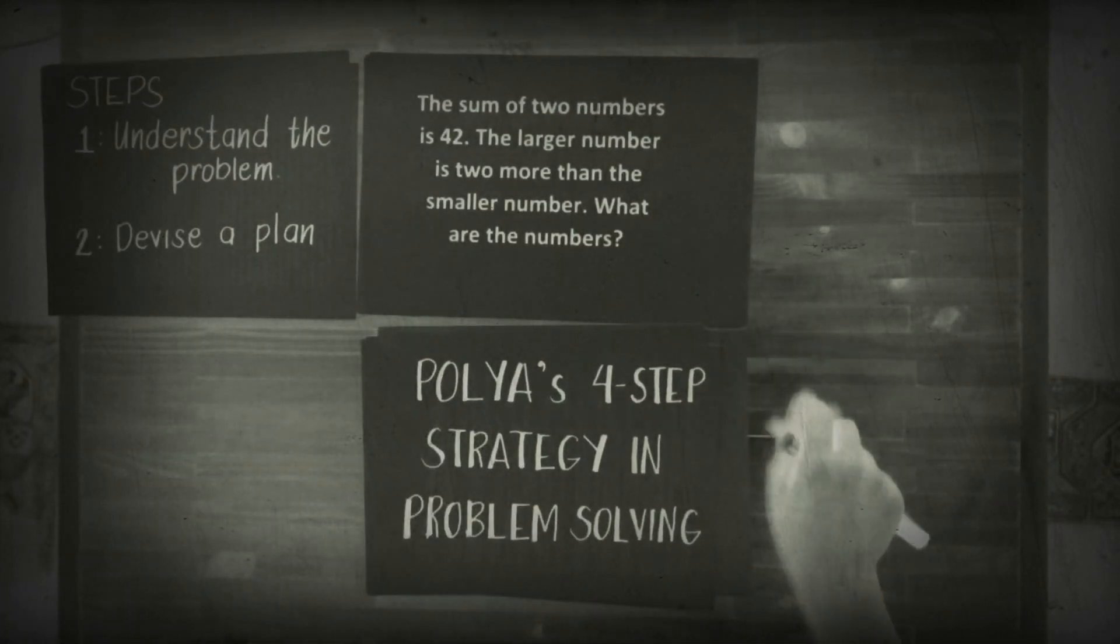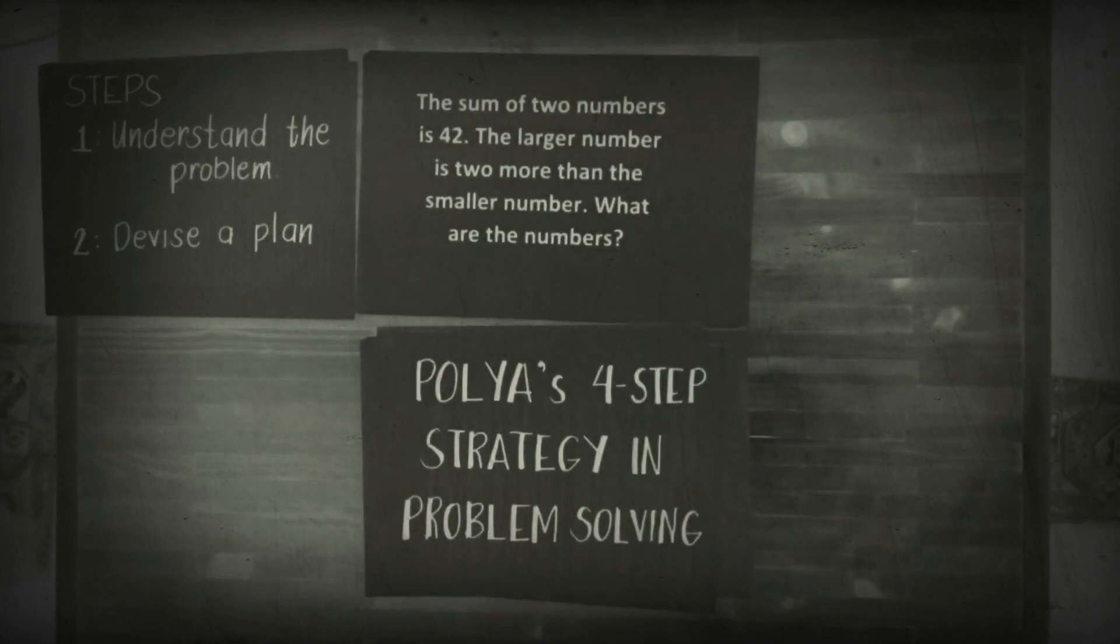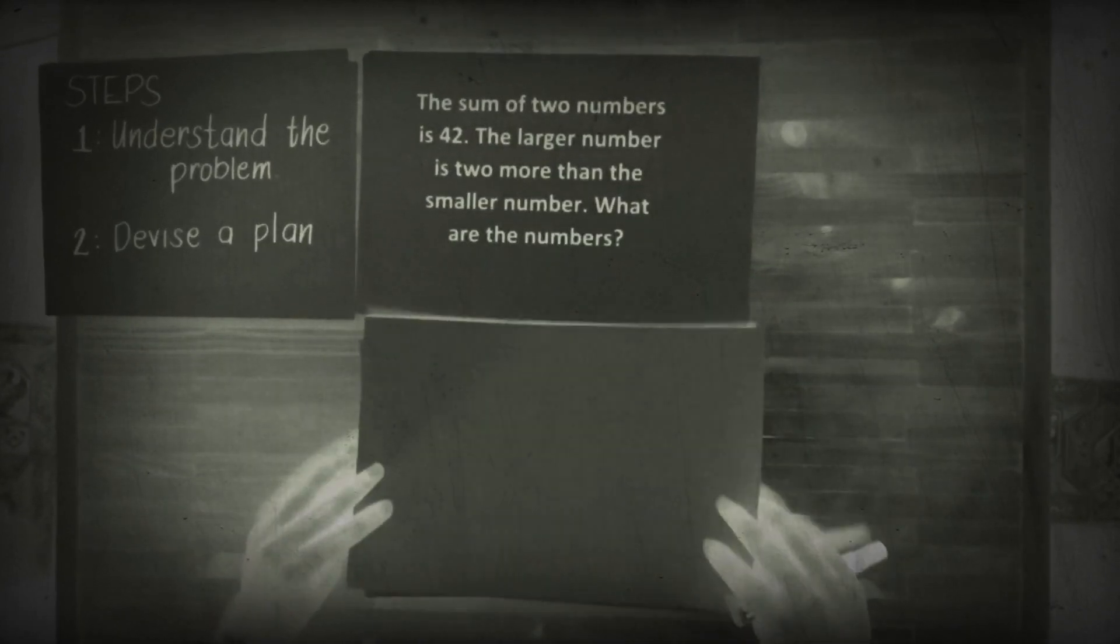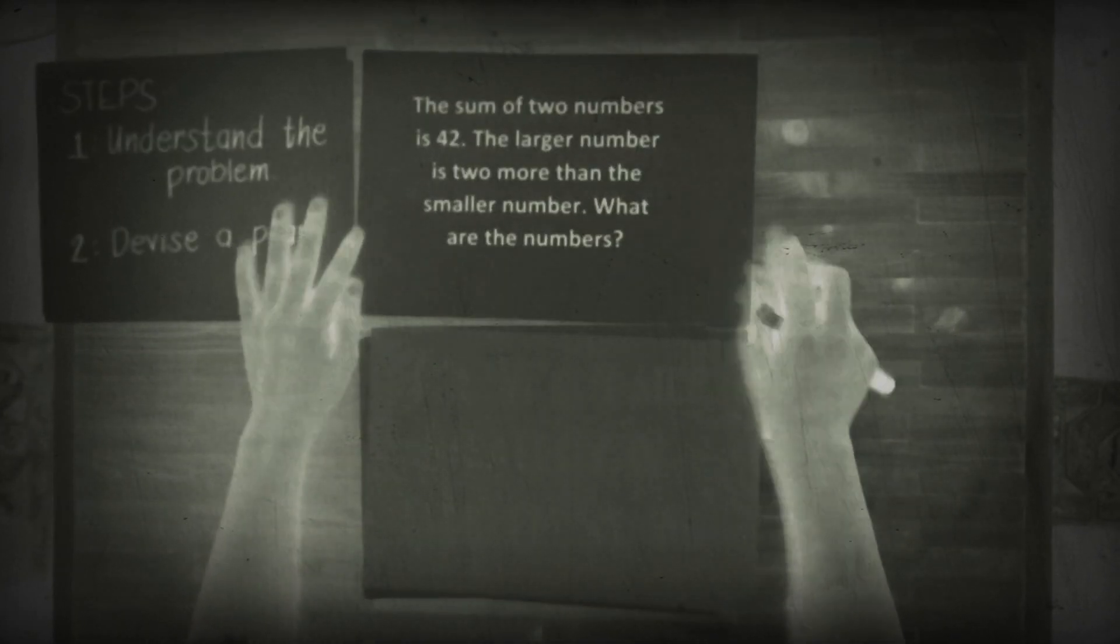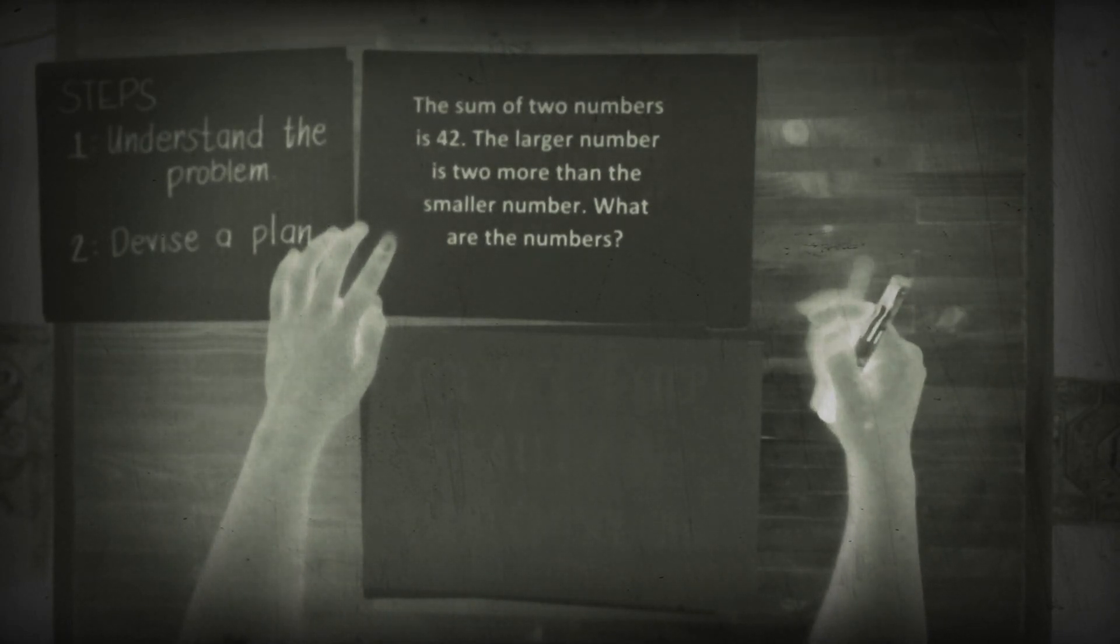Example number one where we can use the Polya's method. This is the problem: the sum of two numbers is 42. The larger number is two more than the smaller number. What are the numbers?